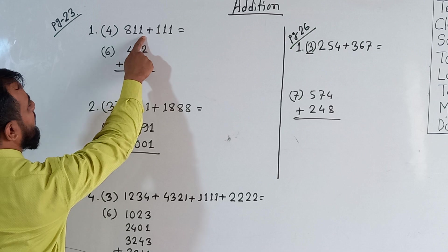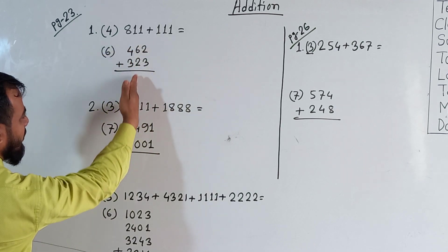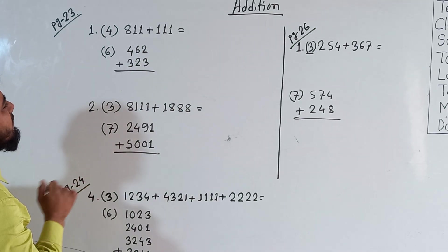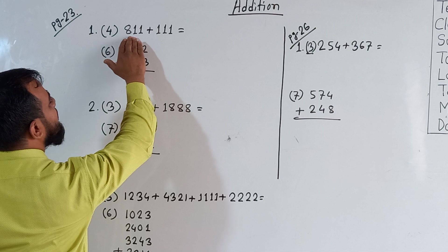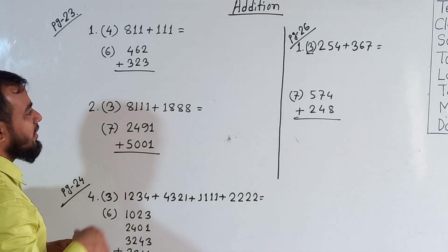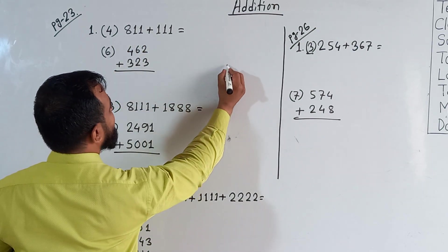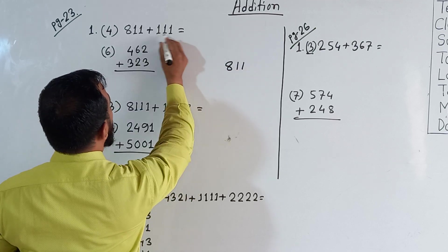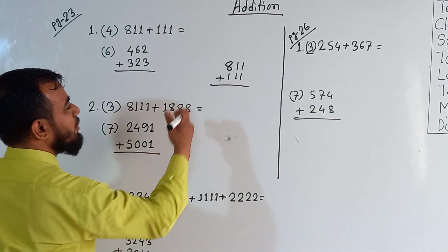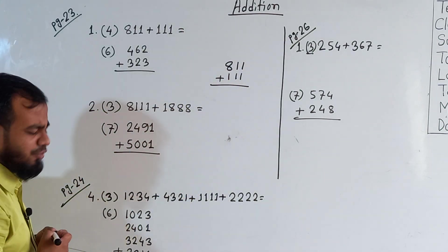This is 811 add with 111. This addition is in a horizontal way, and this addition is in a vertical way. We can do both ways. When addition is in a horizontal way, we can do the rough work in a vertical way on any rough pages. So this is horizontal — I can write it in vertical way like this: it's 811 and it's 111. Now we can add it. This is very easy for us.